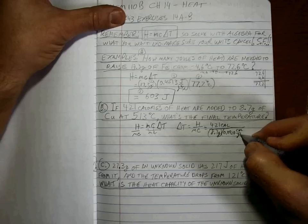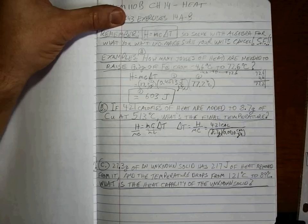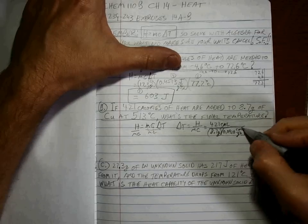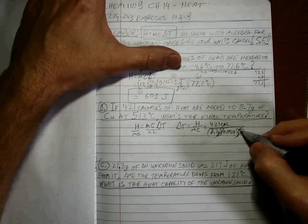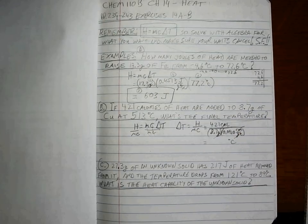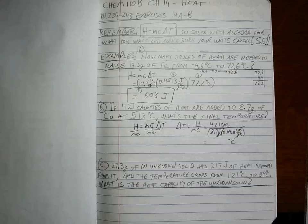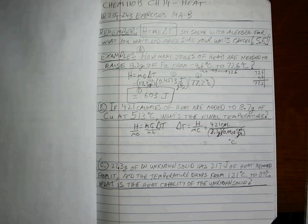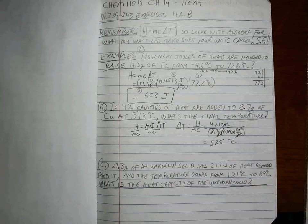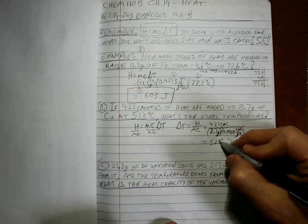When we look at copper, we see in calories it's 0.0920 calories per gram per degree C. So what does that give us? Well, let's check our units first. Calories cancels out, grams cancel out, one divided by one divided by degree C should give us degree C. So let's calculate that. First two sig figs: 421 divided by 8.7 divided by 0.092, 525, actually 526.